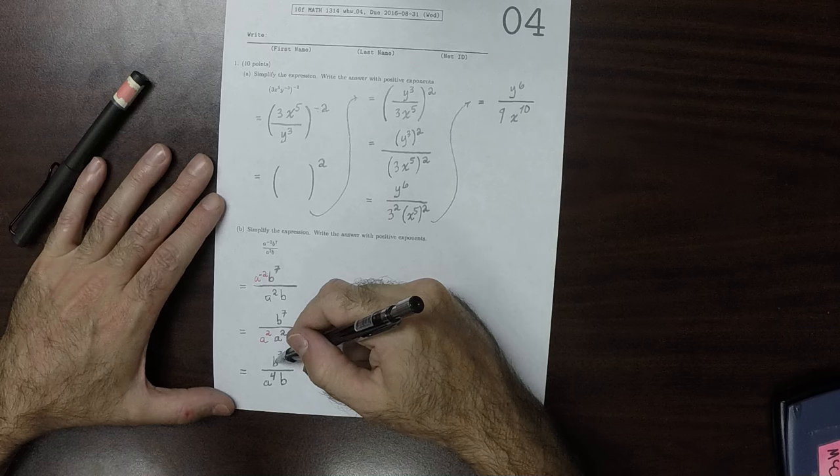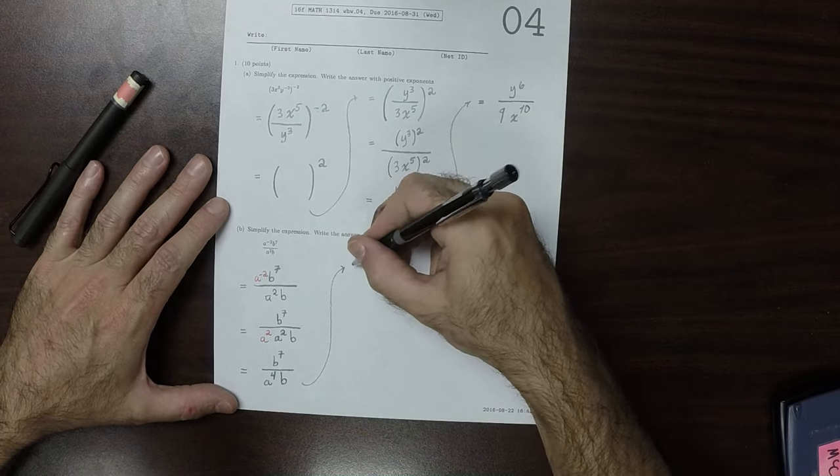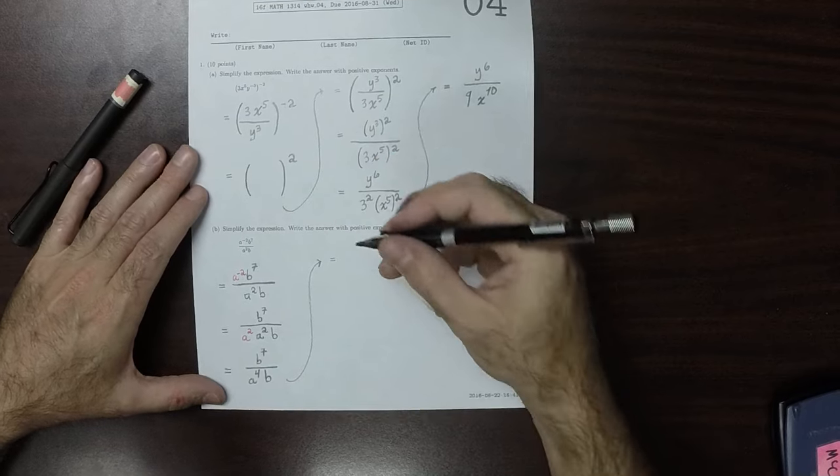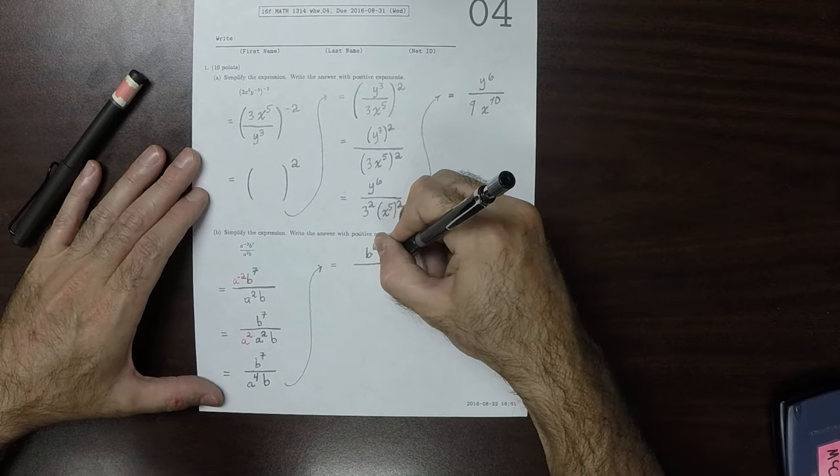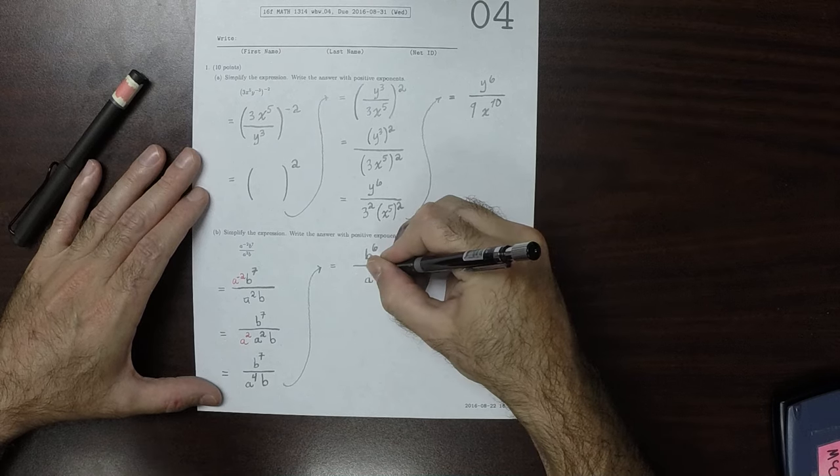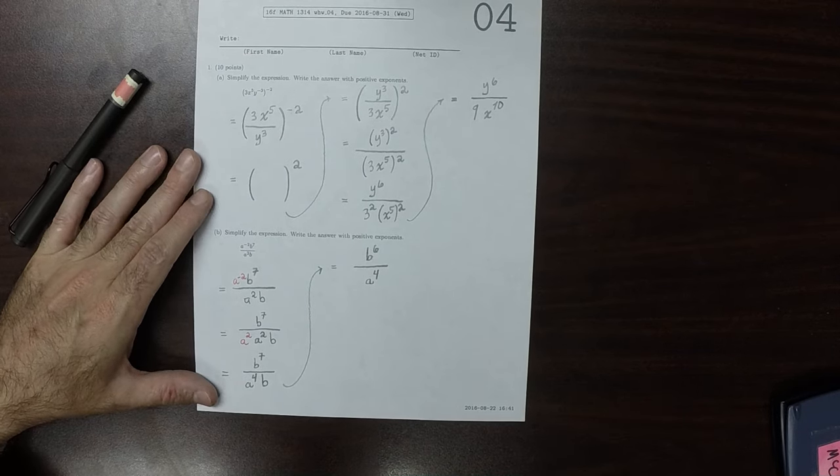And then, when you're dividing like bases, you subtract exponents. So, this would be b to 6, divided by a to 4. And that's the answer to the question.